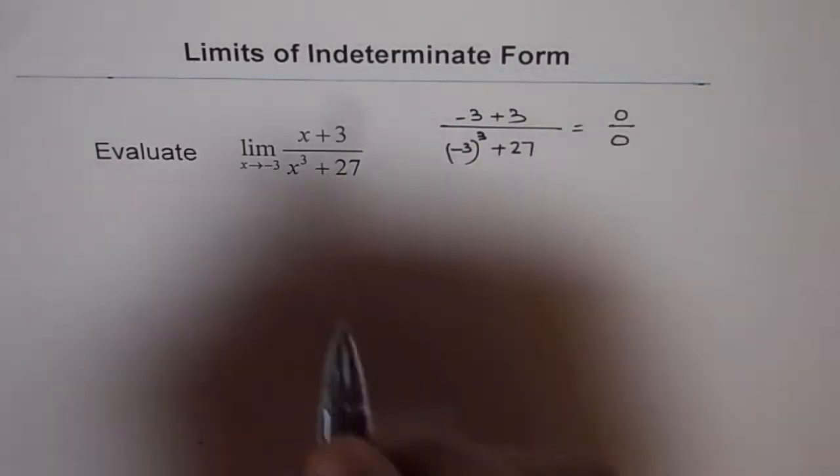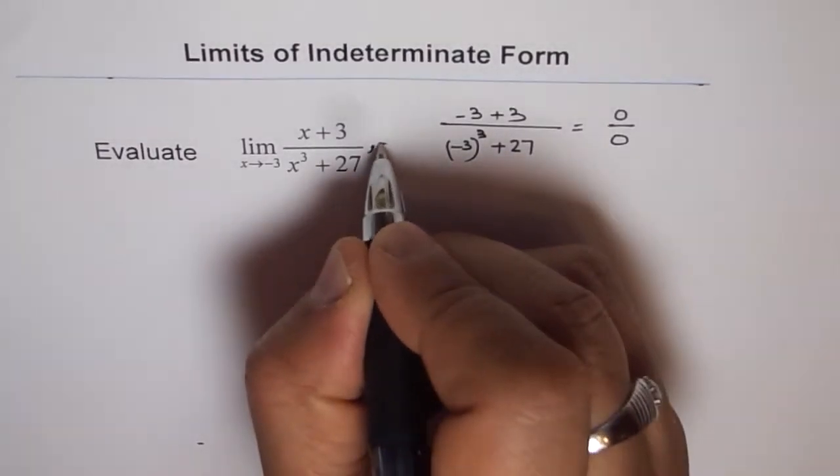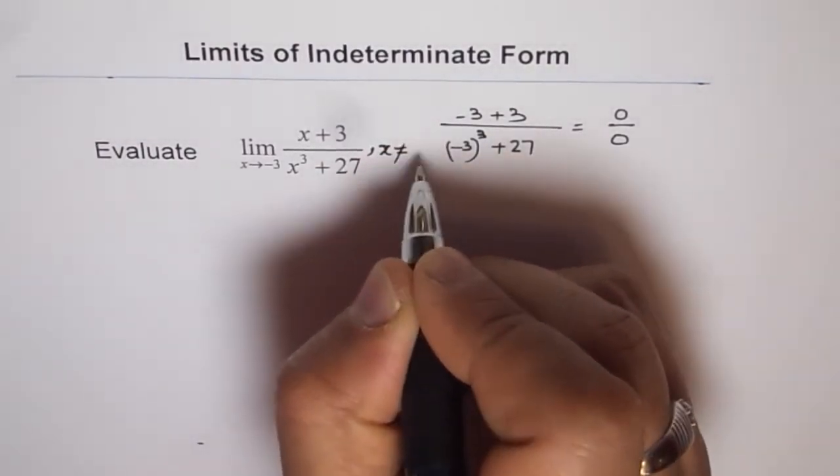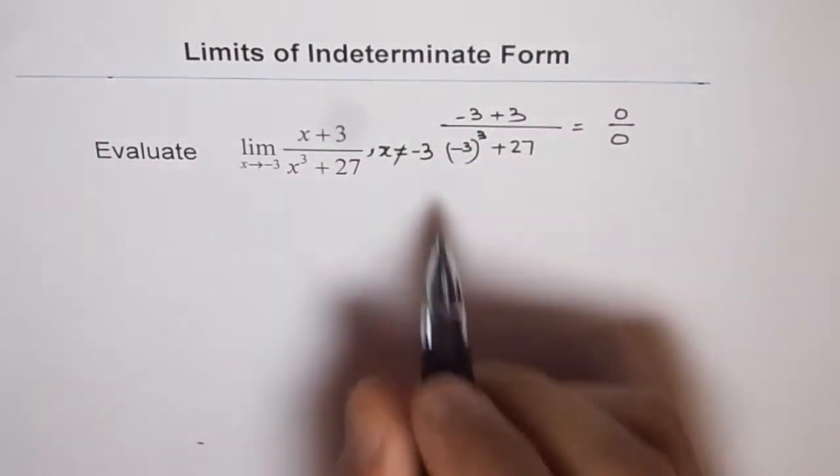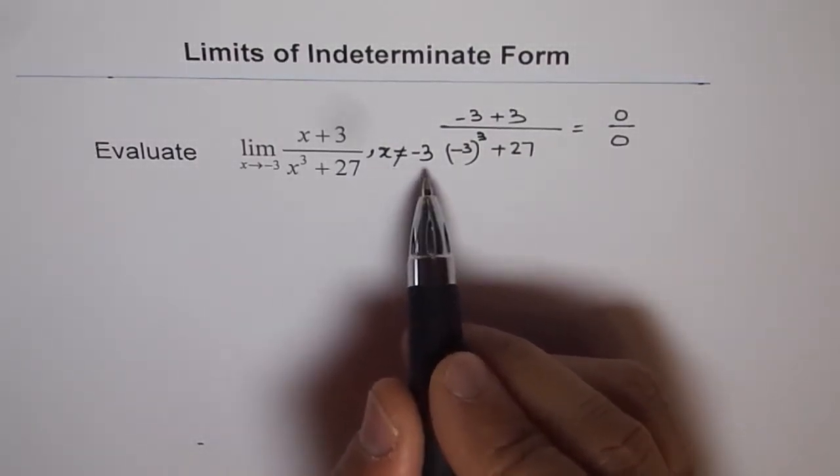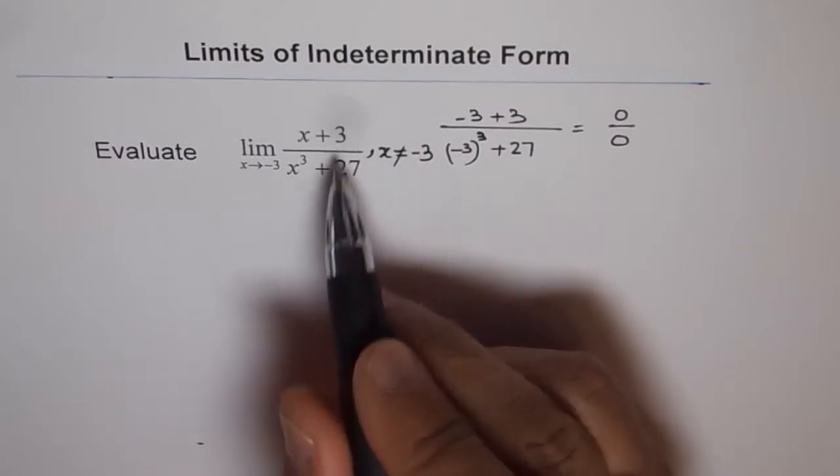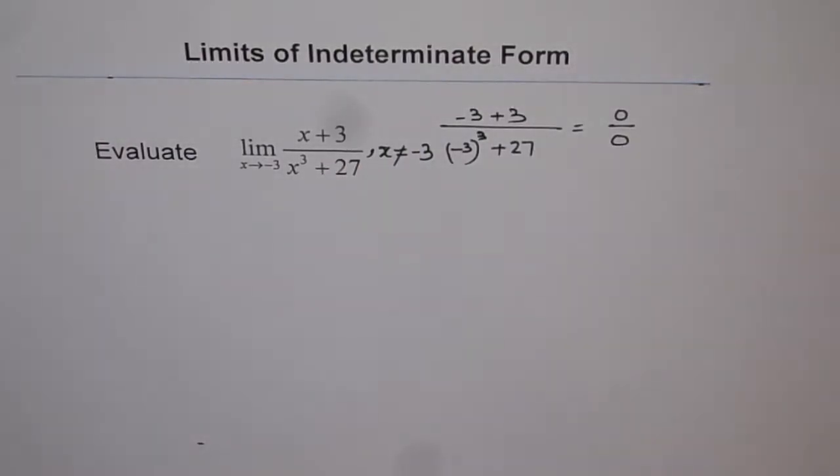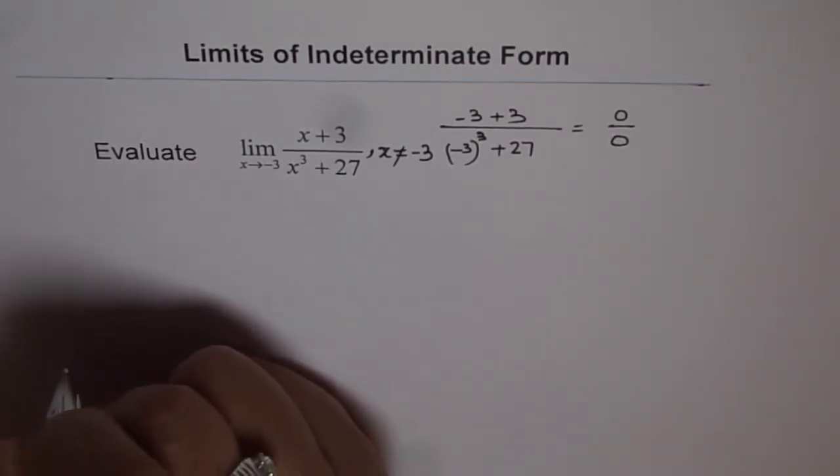When we get 0 over 0, we definitely know that x is not equal to minus 3. So the function itself is not defined at x equals to minus 3, and it suggests that we have a hole at x equals to minus 3. But even if the function is not defined at minus 3, it can have a limit at that point. That's what we are going to check, whether the limit exists or not.